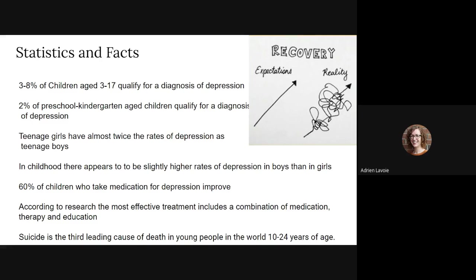Suicide is the third leading cause of death in young people in the world ages 10 to 24. A statistic out of Canada: for youth aged 15 to 24, it is the second leading cause of death after car accidents. On a more hopeful note, suicide rates in Canada are going down on a per capita basis — so when you account for our increase in population, it's actually going down. Hopefully it continues.